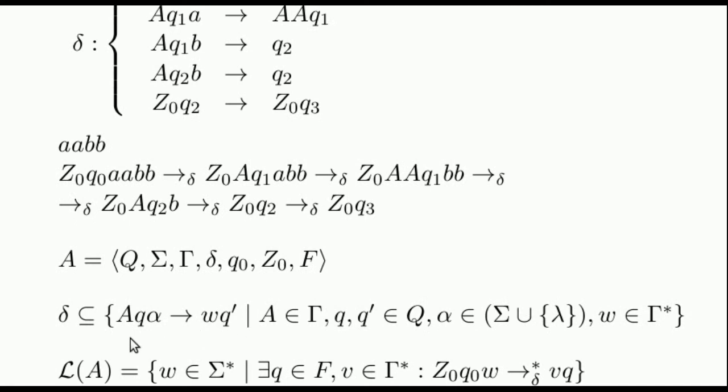We will say that a word is accepted by the automaton if, starting from the initial configuration, there exists a rewrite sequence that reaches a configuration of this kind, where Q is an accepting state.